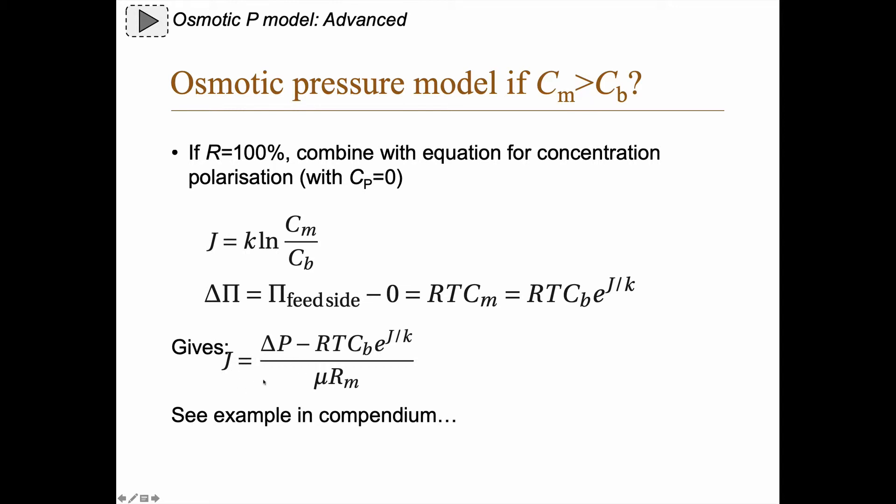In the compendium there is a rather elaborate example where I do some calculations with this. One way to solve this is simply to put this into a computer and iterate, because you have J on both sides and there is no way we can analytically get a nice solution for this.